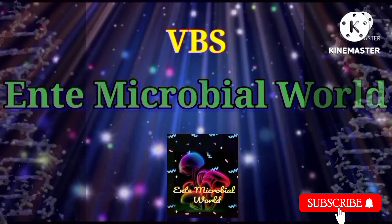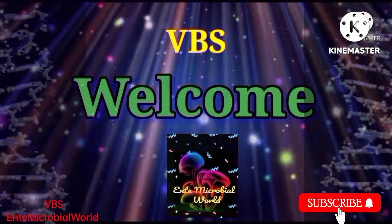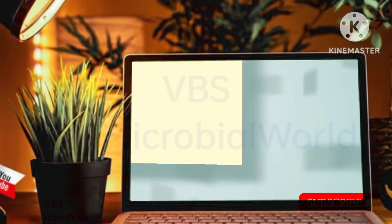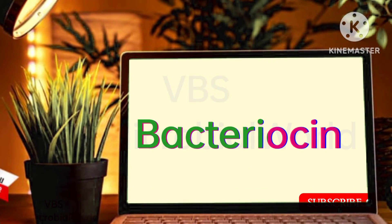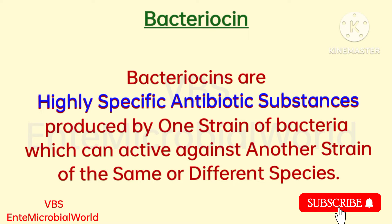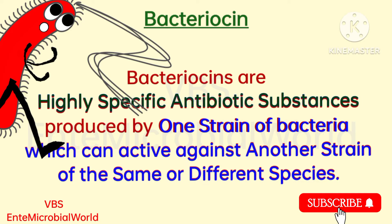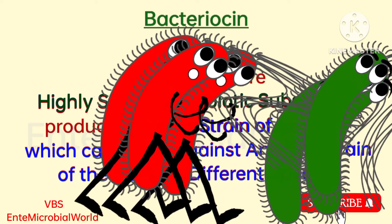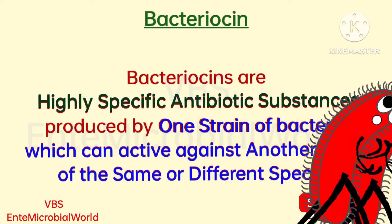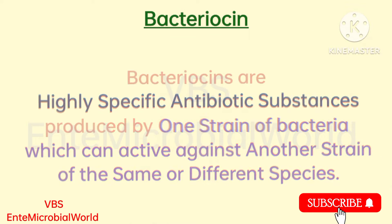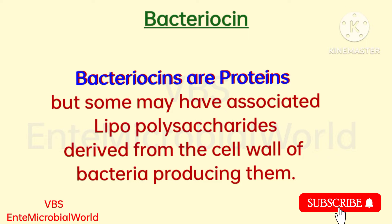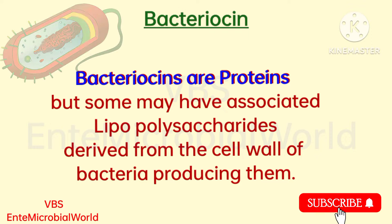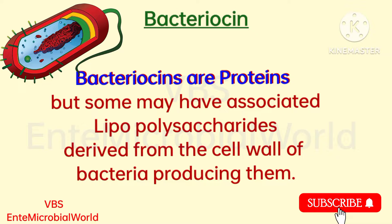Hi friends, Antimicrobial World welcomes you. In this video we are going to see what is bacteriocin. Bacteriocins are highly specific antibiotic substances produced by one strain of bacteria which can be active against another strain of the same species or different species. Bacteriocins are proteins, but some may have associated lipopolysaccharides derived from the cell wall of bacteria producing them.